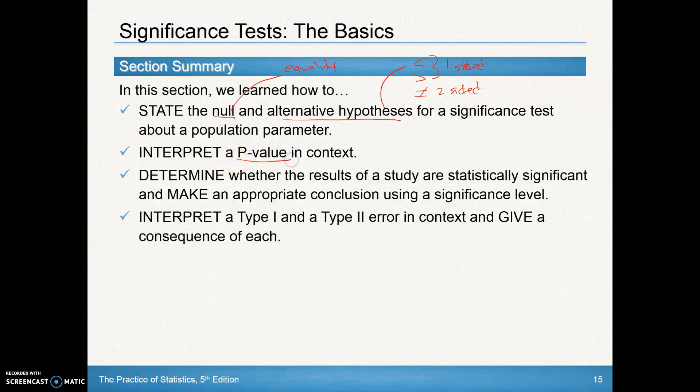The p-value, that's what we're going to use to determine statistical significance, as we state in the next part here. And then you should know a type 1 error, which is rejecting the null when it is true. And type 2, failing to reject the null when it is false.